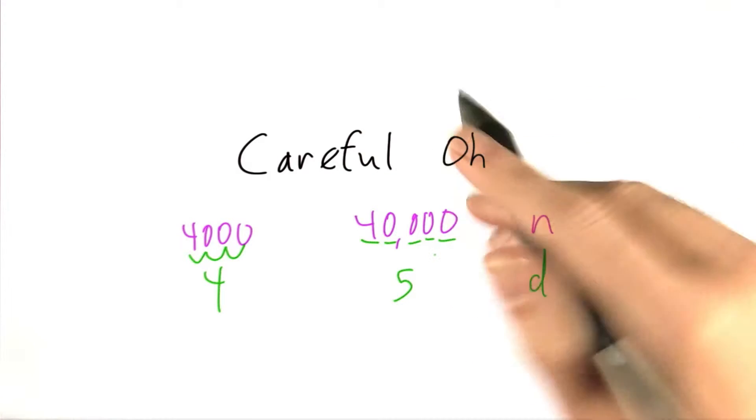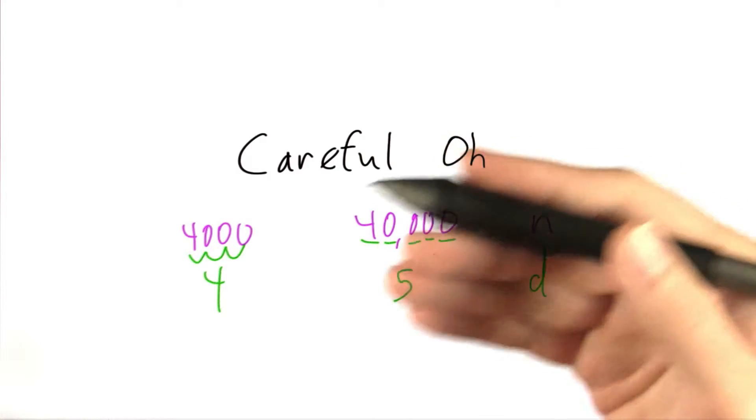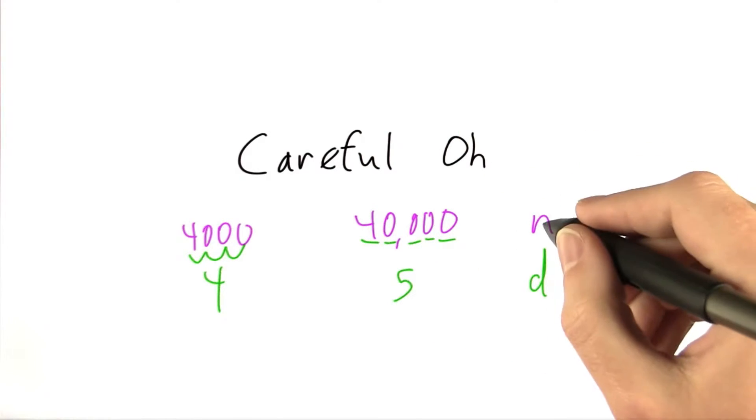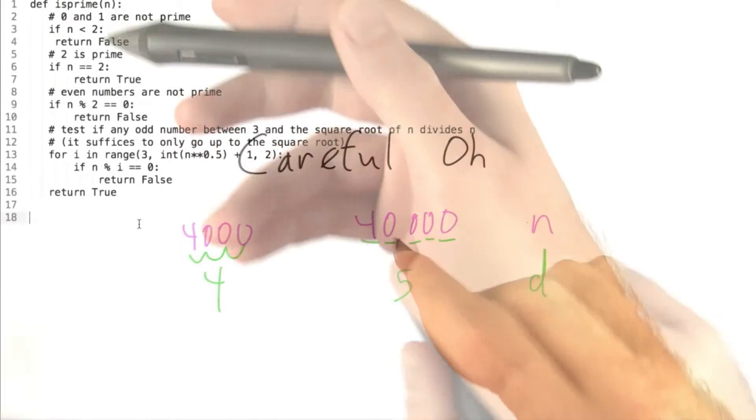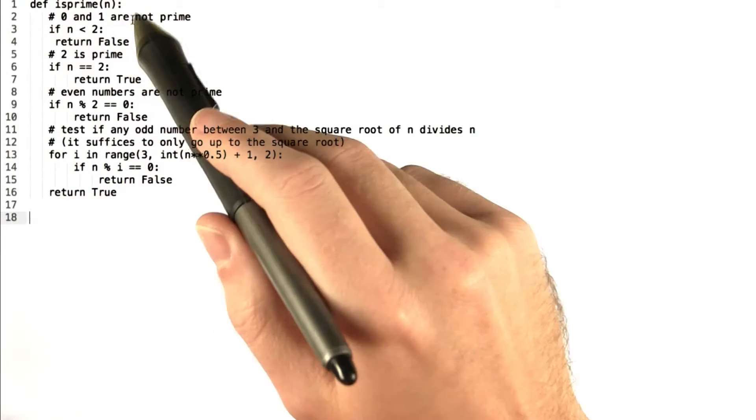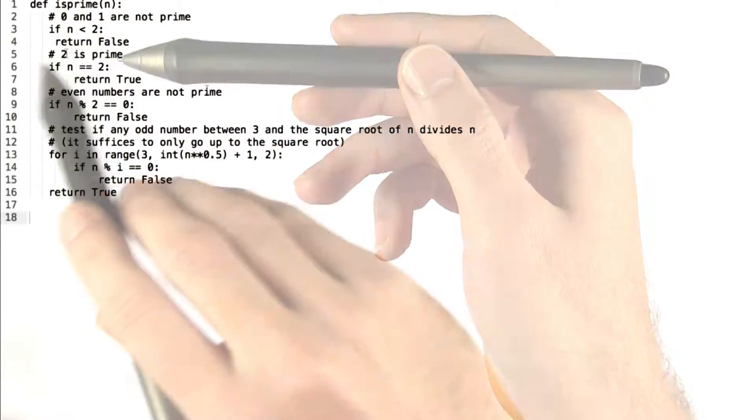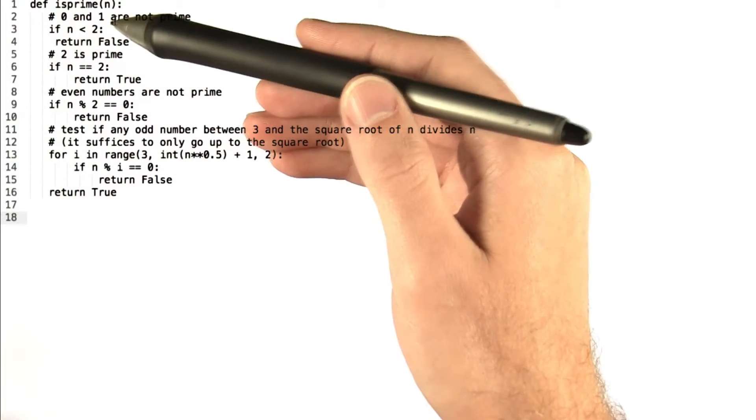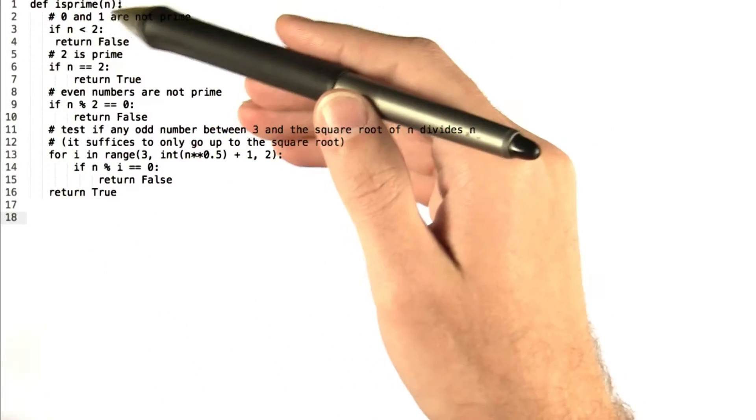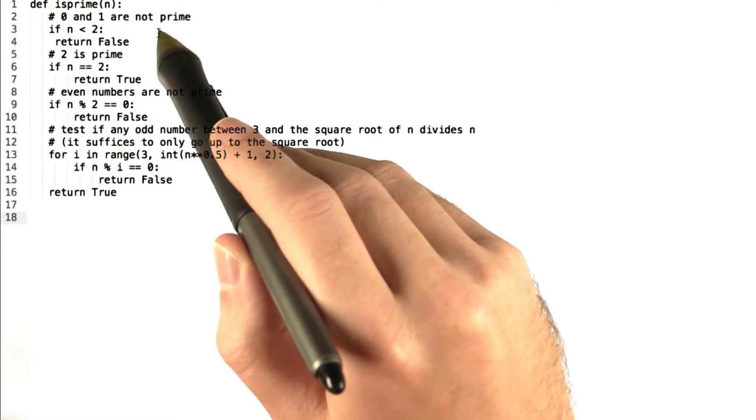And now let's take a look at a fairly simple algorithm to test whether n is prime. So we have this basic isPrime function that tests whether n is prime, and does this by first checking if n is less than 2, since 0 and 1 are not prime, and returning false in that case.